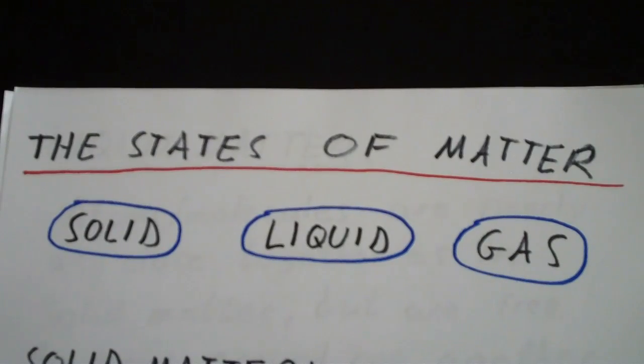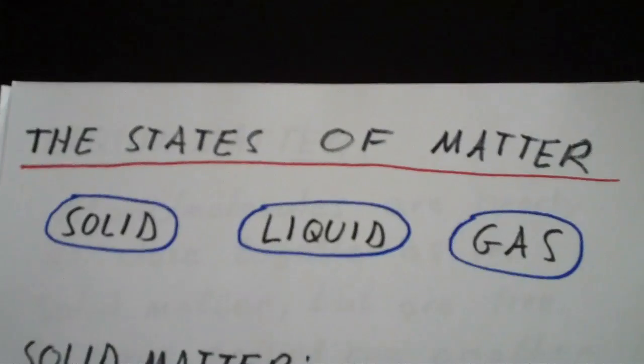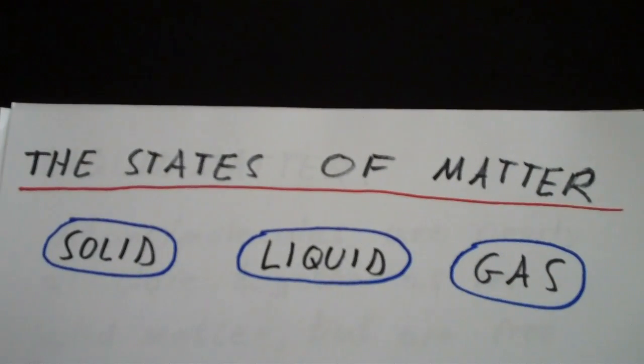In this video I'm going to talk about the states of matter. The three states in which matter can exist are solids, liquids, and gases. Now there's a fourth state called plasma, but we're not really going to get into that in this video.